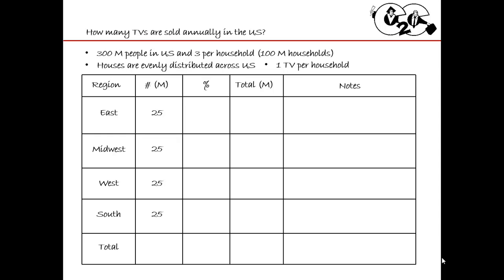Be careful here. Before we were using 80 when we had a 320 million population, so the math was easy. Now you have 25, and that five on the end will throw some people off. So try to use percentages that start with an even number — like 20%, 40%, 60%, 80%. It'll make things easier than using 10% or 30%. Trust me.